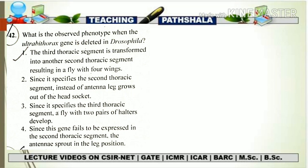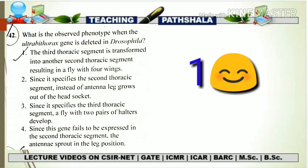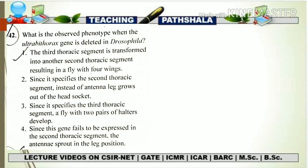Now let's see the options, since we are already done with all the important discussions. The first option is: the third thoracic segment is transformed into another second thoracic segment, resulting in a fly with four wings. The first option is the correct one because it describes all the events we were discussing — the transformation of the third thoracic segment (T3) into T2, resulting in a repetition of the T2 phenotype and a duplication of wings, giving a total of four wings.